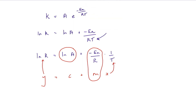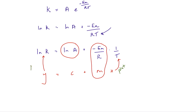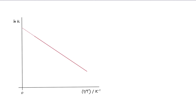So we plot 1 over T on the x-axis and the natural logarithm of the rate constant on the y-axis. The gradient equals minus Ea over the gas constant R, and the natural logarithm of the pre-exponential factor is the intercept on the y-axis. This is typically what such a graph looks like — note the units on the x-axis are kelvin to the minus 1.